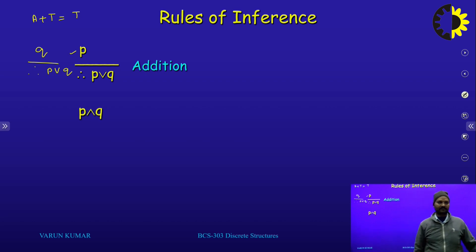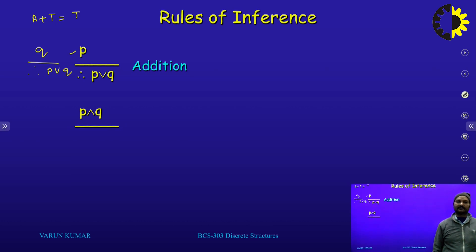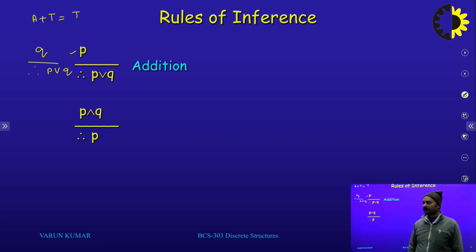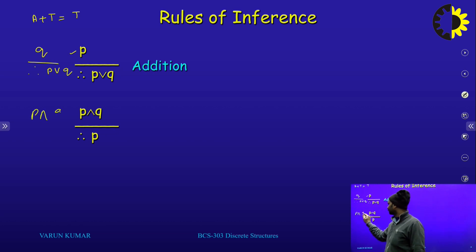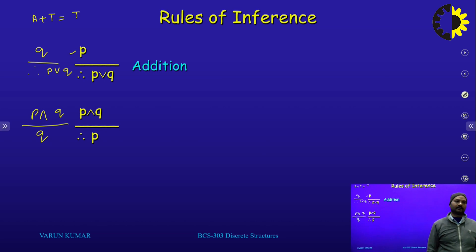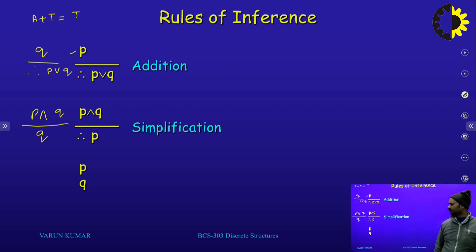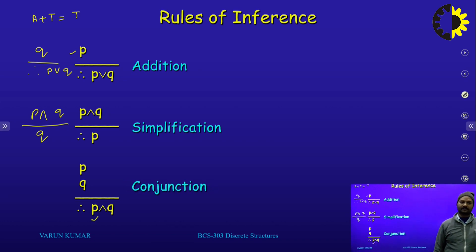If p conjunction with q is true, then its conclusion is p is true. The conjunction of two statements p and q — if p conjunction with q is true, it means q is also true. The conjunction of two statements comes true only when p is true and q is true. This is the law of simplification. Then there is one more law: if p is true and q is true, then p conjunction with q is also true. This is the rule of conjunction.